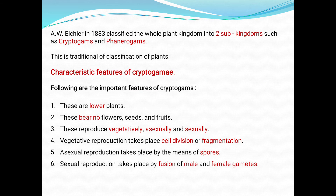In 1883, Eichler classified the whole plant kingdom into two sub-kingdoms: cryptogams and phanerogams. Cryptogams are the plants that do not reproduce flowers nor seeds. The opposite, phanerogams, are the plants which are capable of producing flowers and seeds. This is termed the traditional classification in plants — the division into two sub-kingdoms, cryptogams and phanerogams.